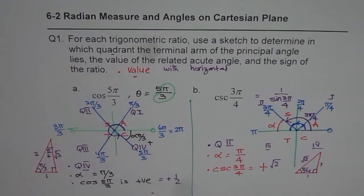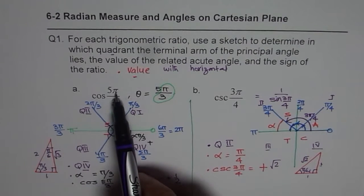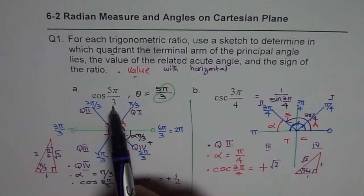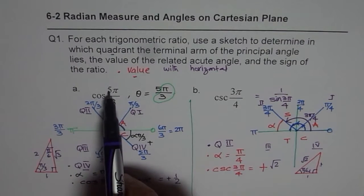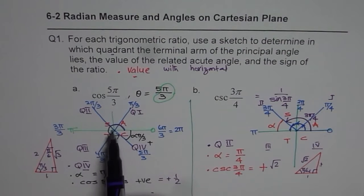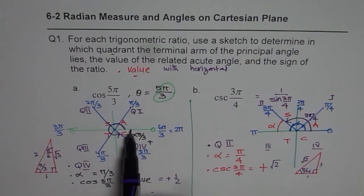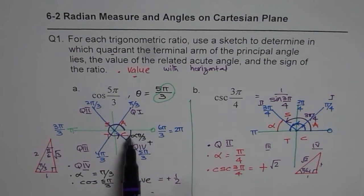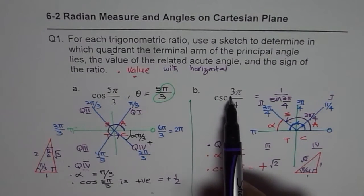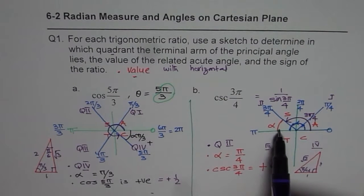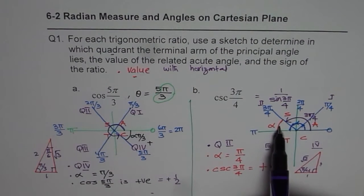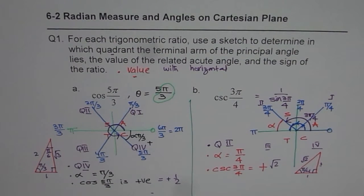To summarize: whenever you are given any angle, divide pi into equal parts matching the denominator — in the first case three equal parts, in the second case four equal parts. Count the numerator of those parts to find the quadrant. Apply the CAST rule to find the sign. The related acute angle is always positive and is the angle the terminal arm makes with the horizontal — pi by three in the first case, pi by four in the second. I hope that helps. Thank you.